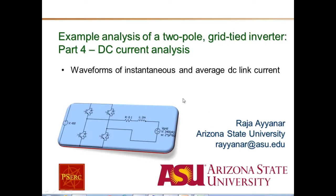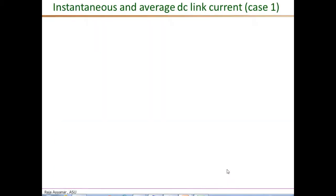This is the remaining part of the DC current analysis for our example two-pole converter for two different power flow conditions. So far what we've been discussing is the cycle-by-cycle average of the DC link current.